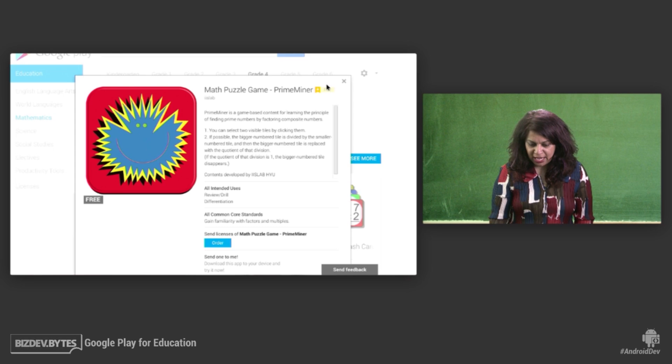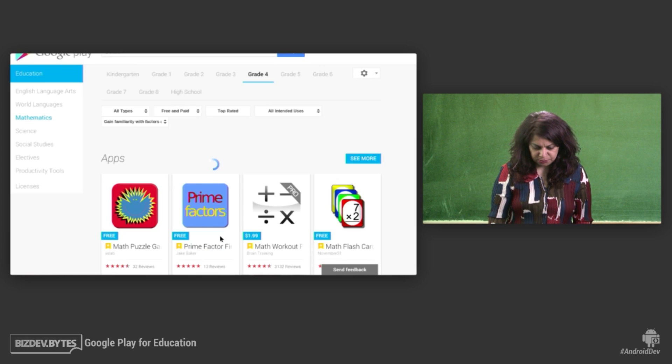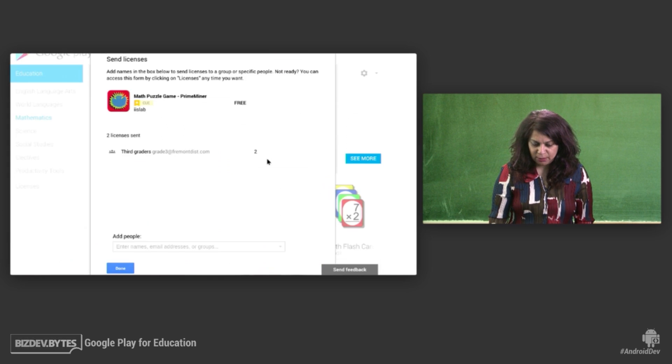And I see it has a badge for Q, which means that an external vendor Q has reviewed it and found that it is appropriate for teachers. And I know that Q is composed of teachers who are reviewing apps. And so as a teacher, I really can rest assured that this app corresponds to what I need to teach. When I click on order, I'm able to select a group of students that I already had set up, my fourth grade class, and enter that group in there. And with one click, I'm going to be able to send this app to all their devices.